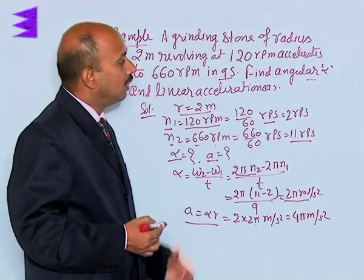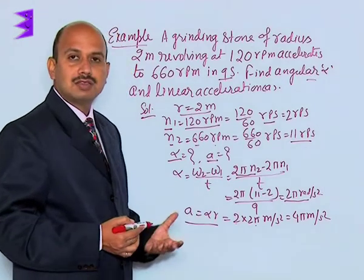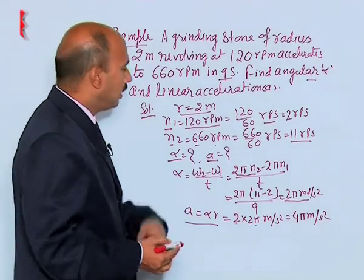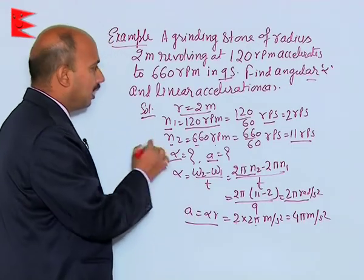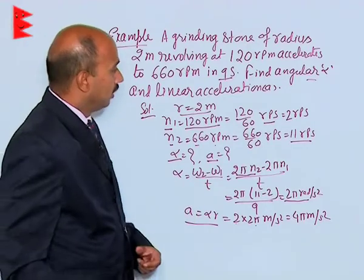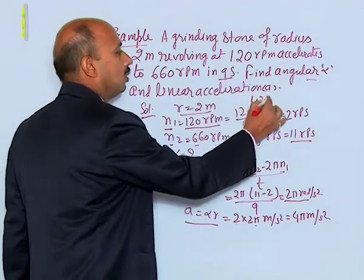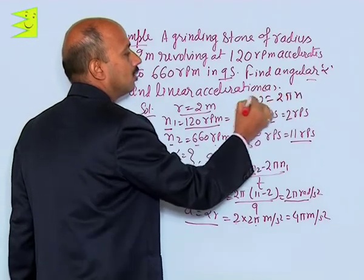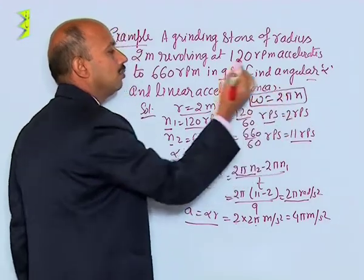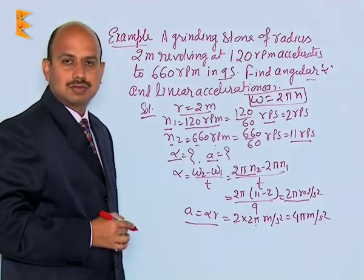So here you can calculate easily the linear acceleration and angular acceleration, but take care for this formula: omega is equal to 2 pi n where n is the number of revolutions per second. Thank you.